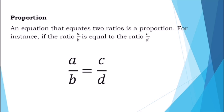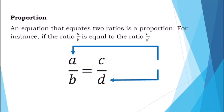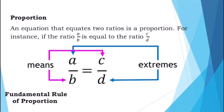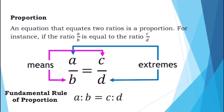The numbers a and d are the extremes of the proportion. The numbers b and c are the means of the proportion. For the fundamental rule of proportion, if a is to b is equal to c is to d, then a over b is equal to c over d, provided that a, b, c, and d are real numbers and none of them are equal to zero.